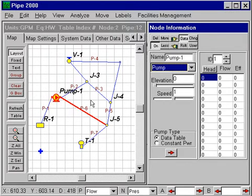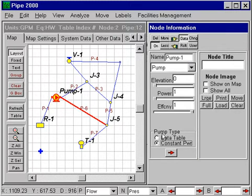For pumps, we have data for the ID, the head flow data. If it's a data table pump, we can also select a pump of constant power and just enter the power.